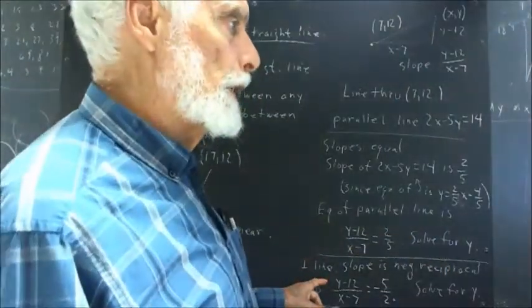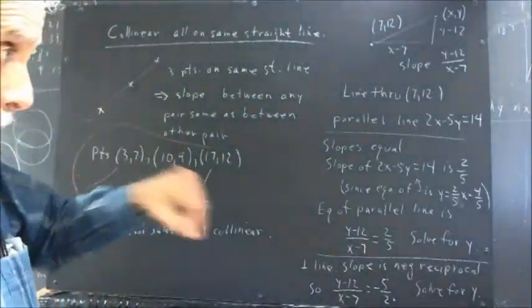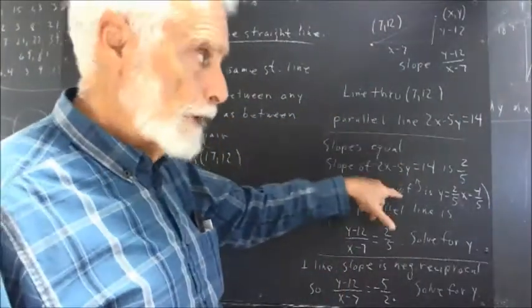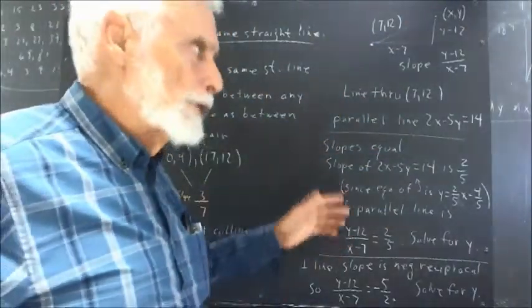What about a perpendicular line? Now, people didn't remember this. People were pretty good to come up with the idea that you have to have equal slopes to have a line parallel. Somebody said, well, it's a reciprocal.